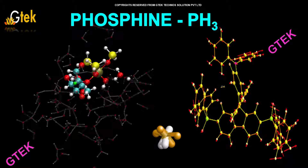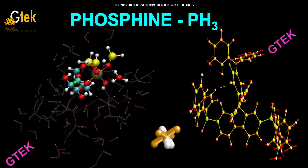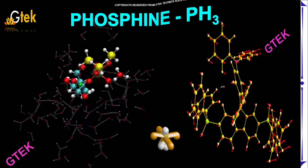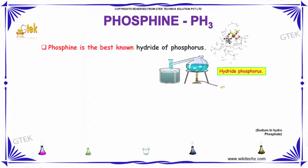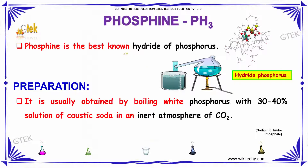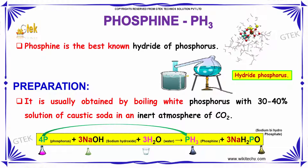Now, let's look into the most important area of Phosphine, PH3. Phosphine is the best known hydride of phosphorus.